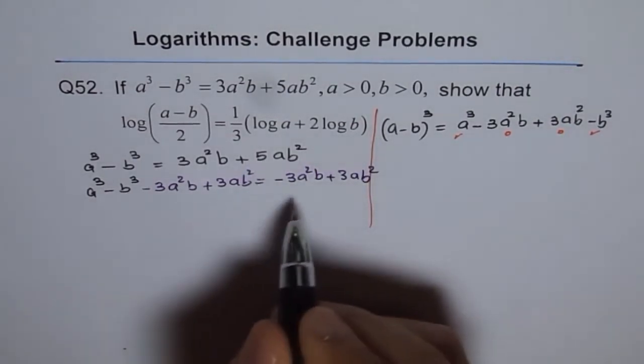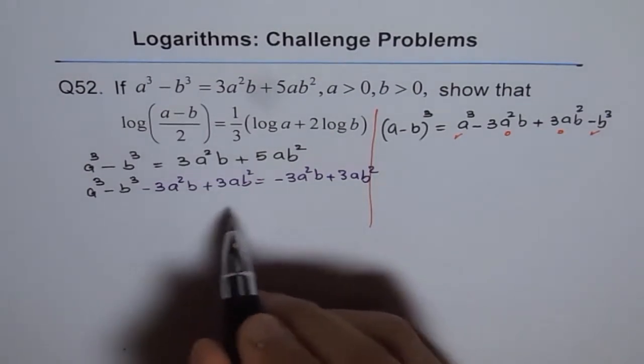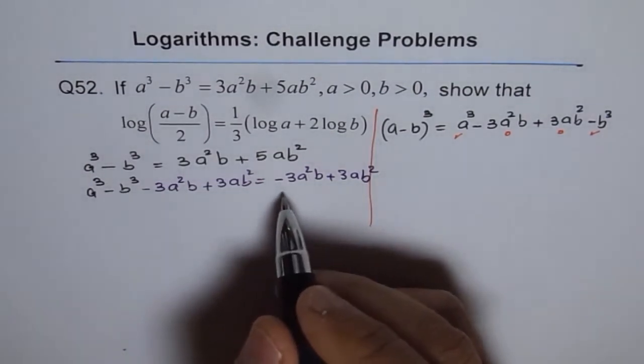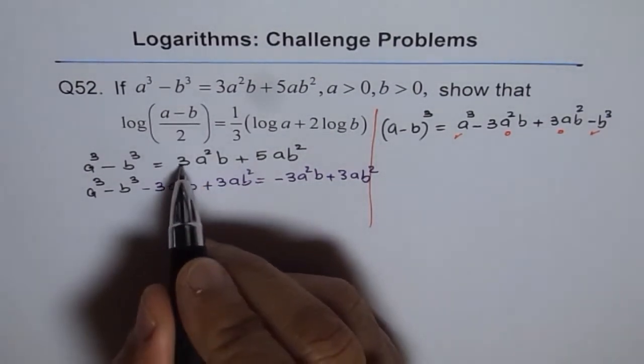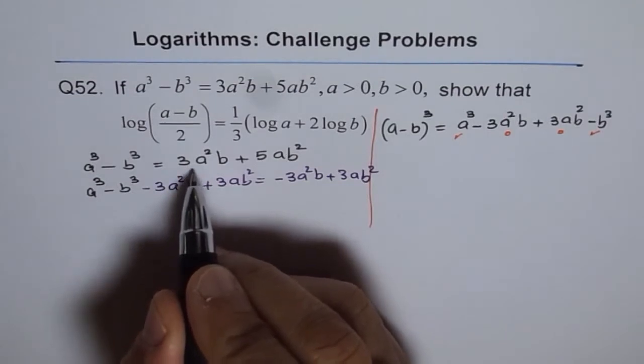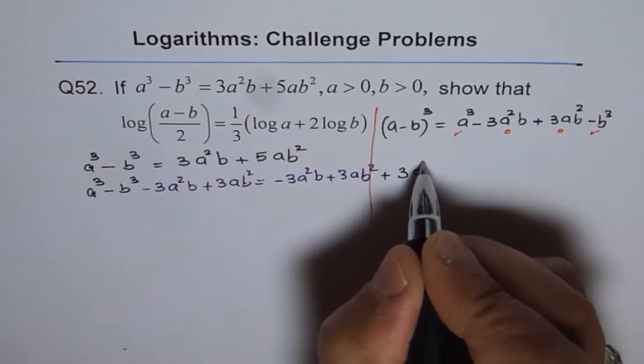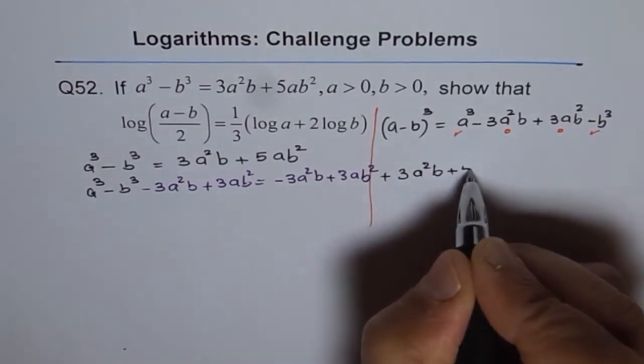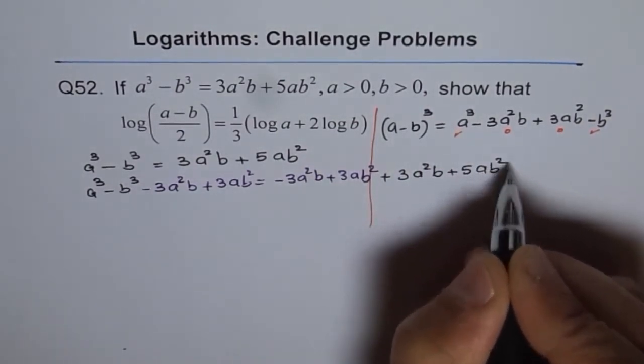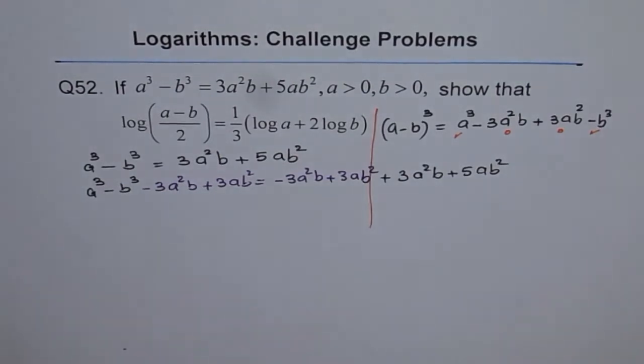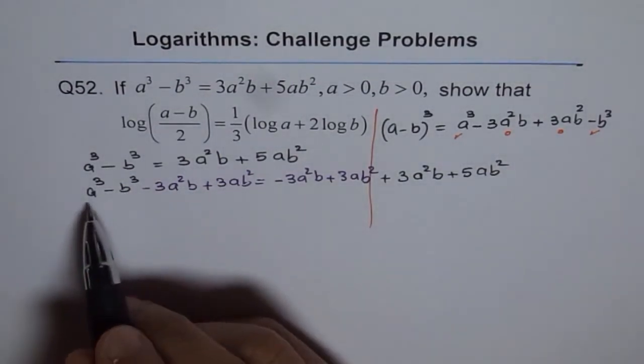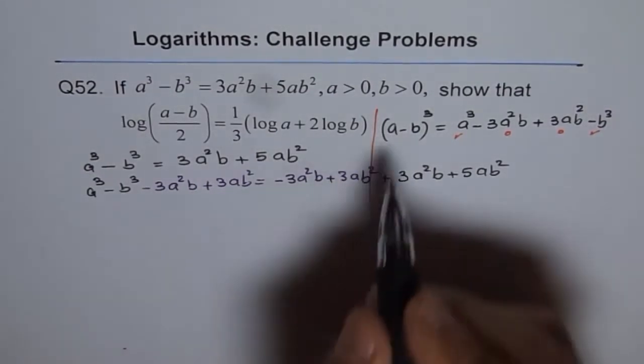When you add or subtract same things from equalities, then equalities maintained. It's an equivalent equation. And the rest of the terms on the right side are 3a square b plus 5ab square. So, that is my equivalent equation. And our left side is a minus b whole cube and that was the whole purpose.